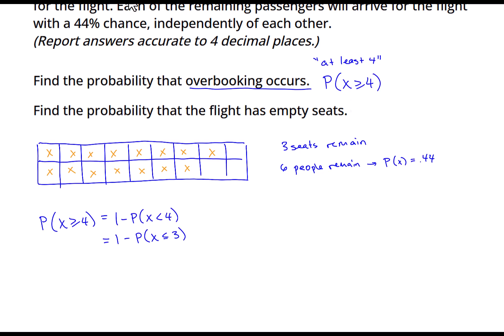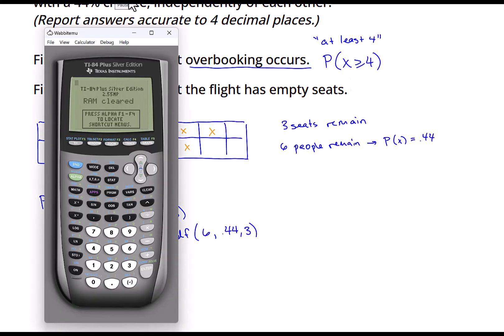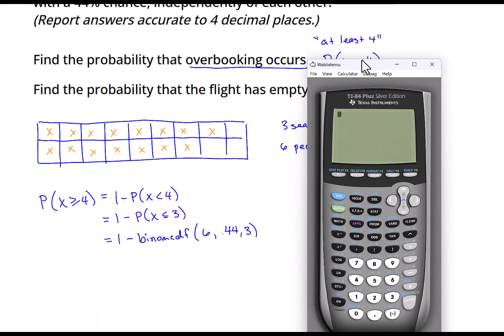That's not exactly our CDF-style function, so we would also need to do one additional change and say this is one minus the probability X is less than or equal to three. And then that fits us into binomial CDF-style probability. So we can now get this by doing one minus binom CDF. The number of trials is six, there's six people remaining. The probability that any one person shows up is 0.44 and three is our last input. Now let me get that on the calculator.